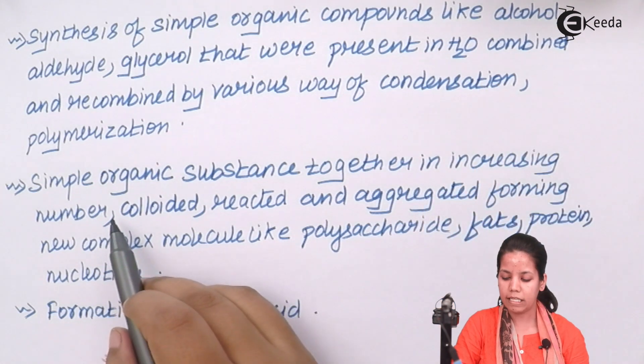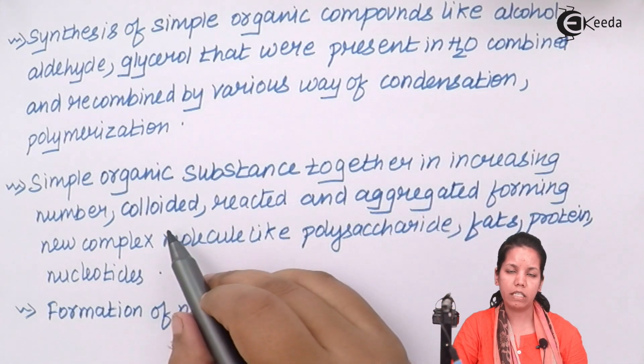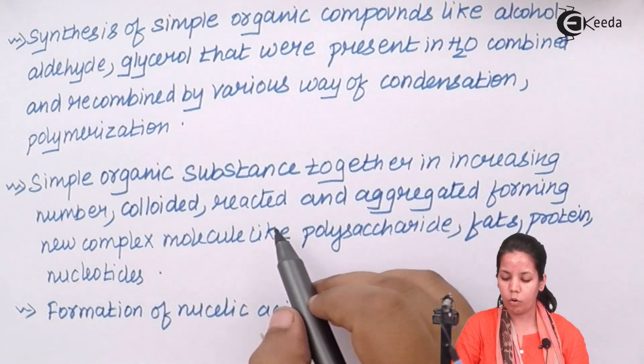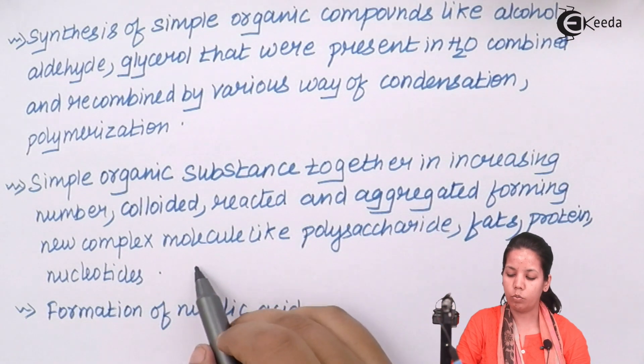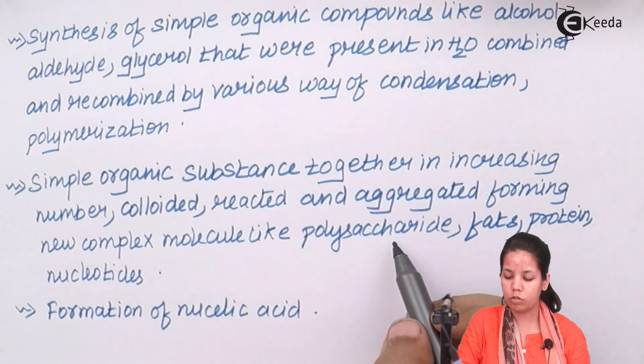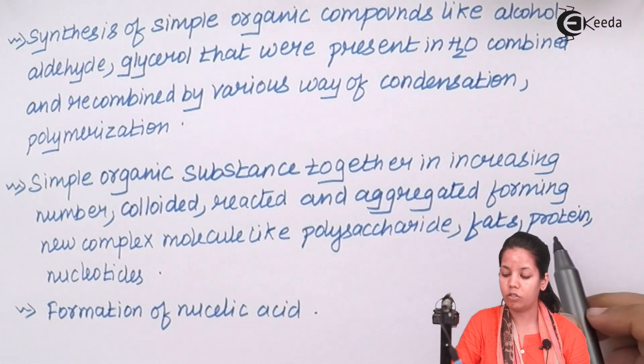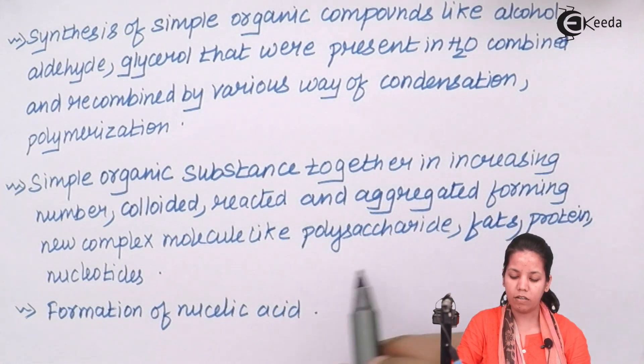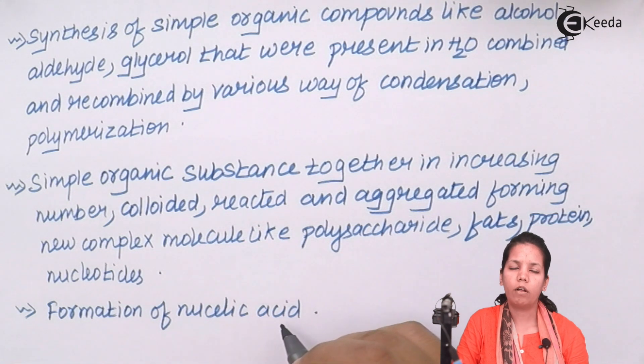Now simple organic substances together in increasing number formed a mass or a mixture or a colloid. They collided and reacted, aggregated to form new complex molecules which were polysaccharides or large chain of molecules which could be carbohydrates, glucose, maltose, fat molecules, saturated and unsaturated fatty acids, proteins, polypeptide molecules as well as nucleotides, the DNA molecule. Finally there was formation of nucleic acid or nucleotide or DNA molecule.